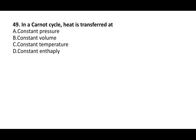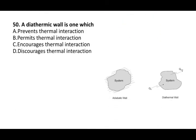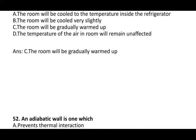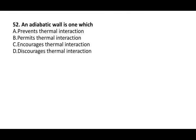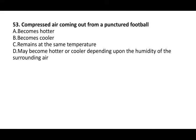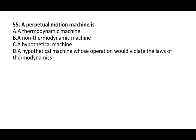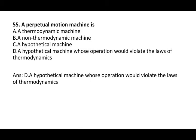In a Carnot cycle, heat is transferred at constant temperature. Next question: a diathermic wall is one which permits thermal interaction. Next question: the door of a running refrigerator inside a room was left open — the room will gradually warm up. Next question: an adiabatic wall is one which prevents thermal interaction. Compressed air coming out from a punctured football becomes cooler. A calorie is a measure of quantity of heat. A perpetual motion machine is a hypothetical machine whose operation would violate the laws of thermodynamics.